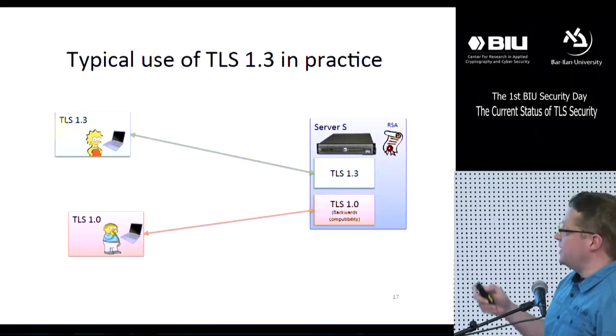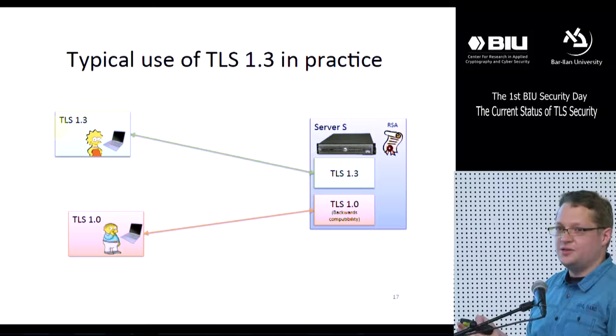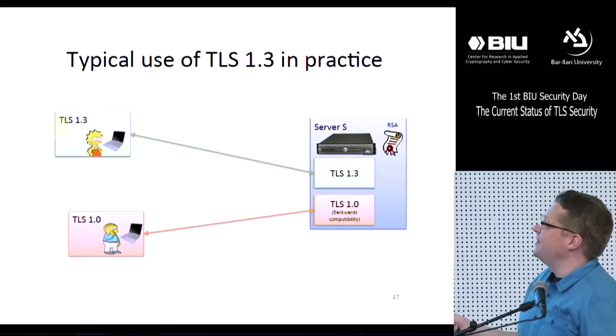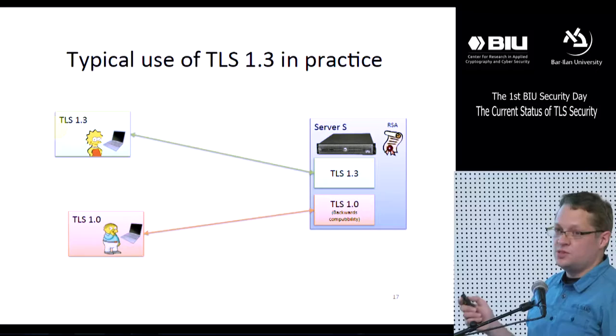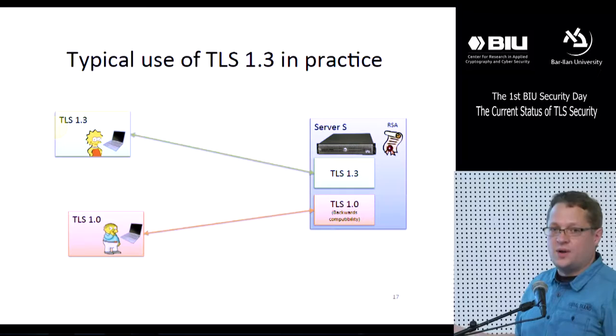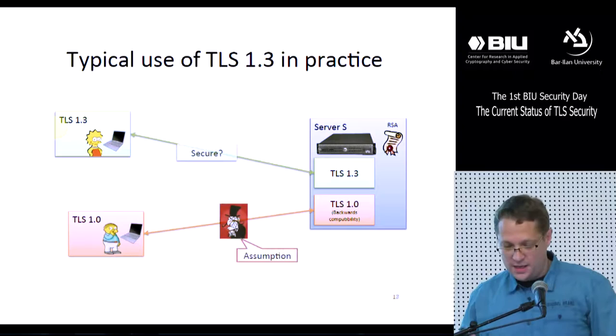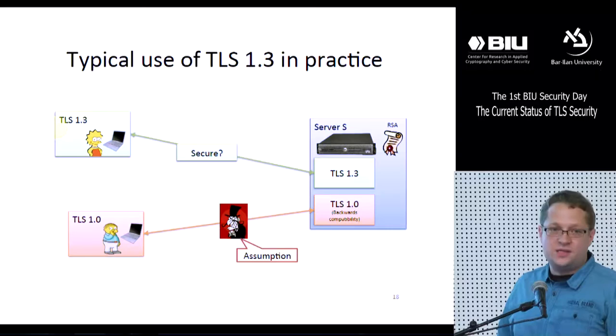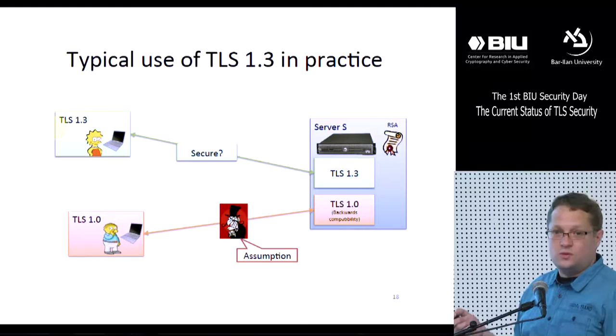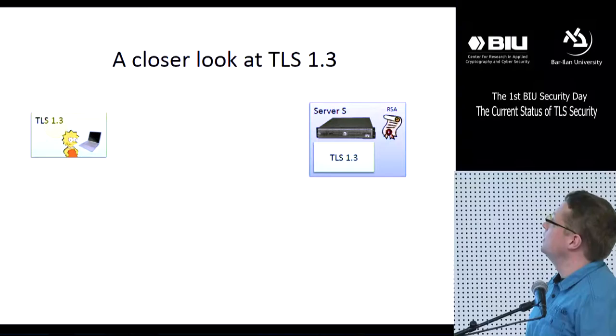We have two kinds of users: smart users like Lisa, who follow TLS attack literature, is aware of the weaknesses of TLS versions before 1.3, and therefore uses exclusively TLS 1.3. And then we have old diehard users like Ralph, who is not so clever and uses the old TLS 1.0 version. By our assumption, Ralph's connection is insecure — but we would at least expect and hope that Lisa's TLS 1.3 connection is secure.